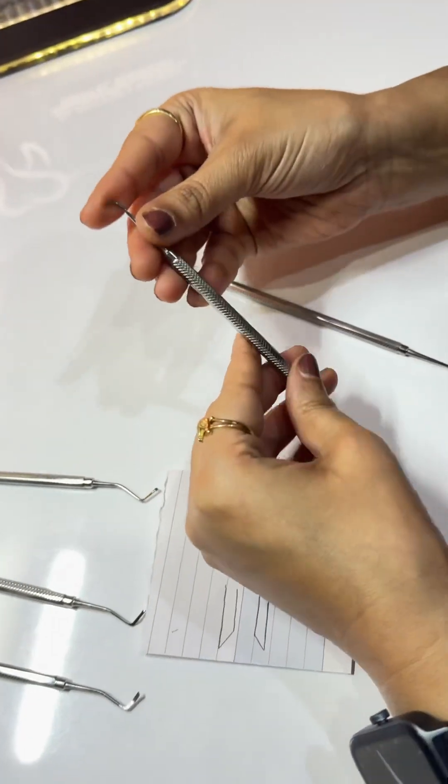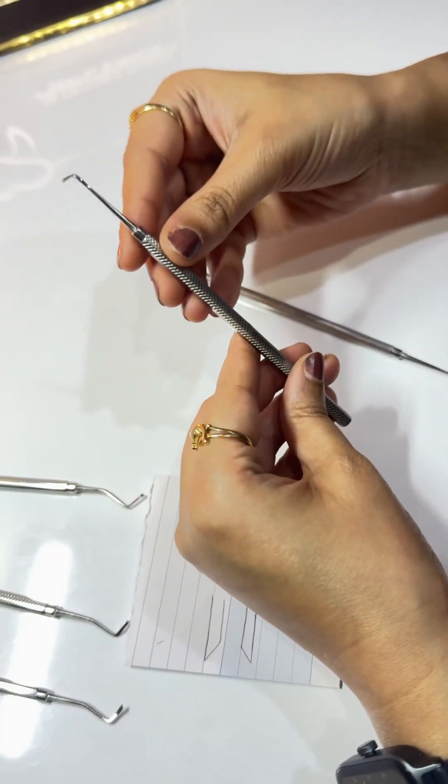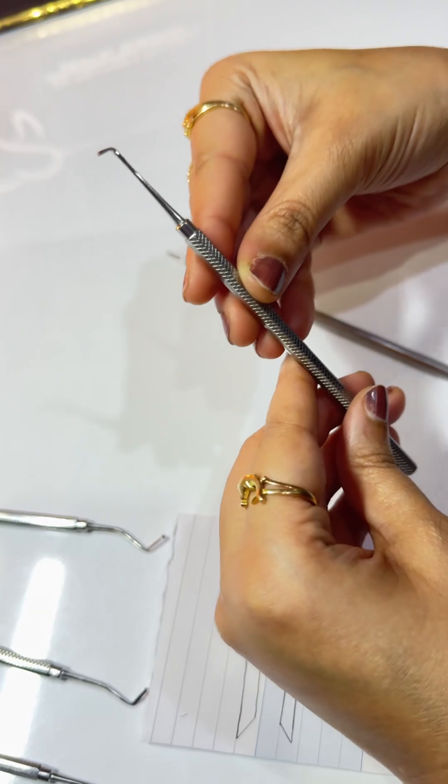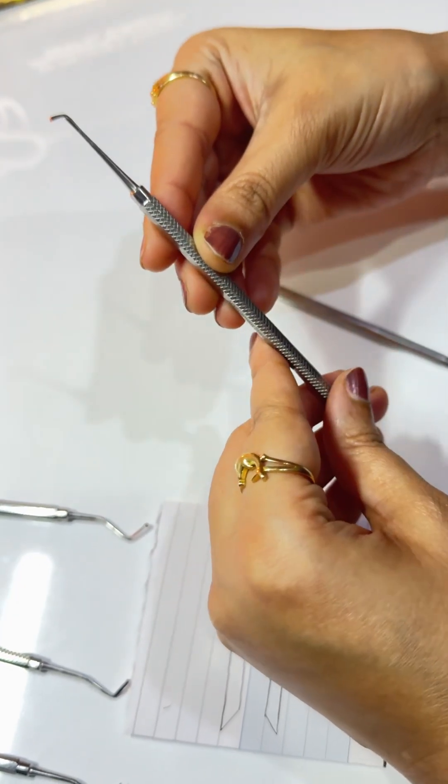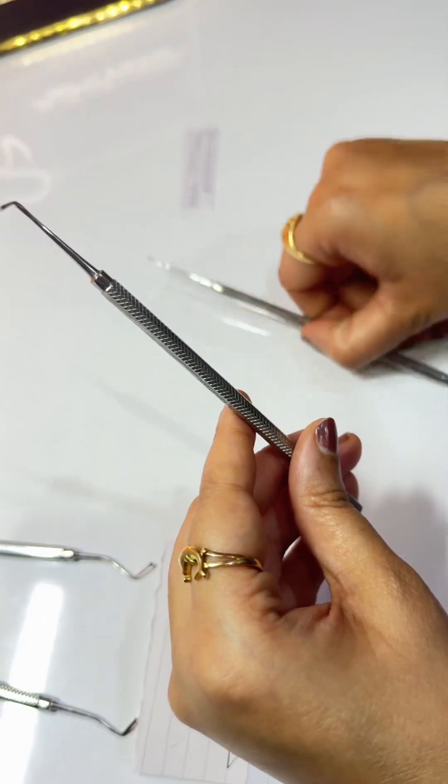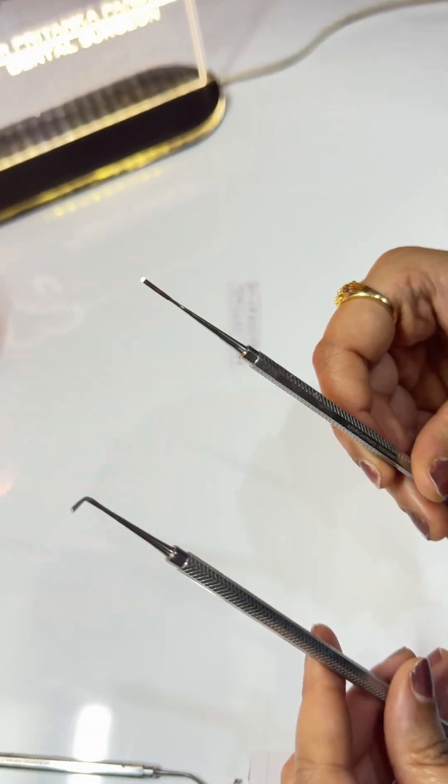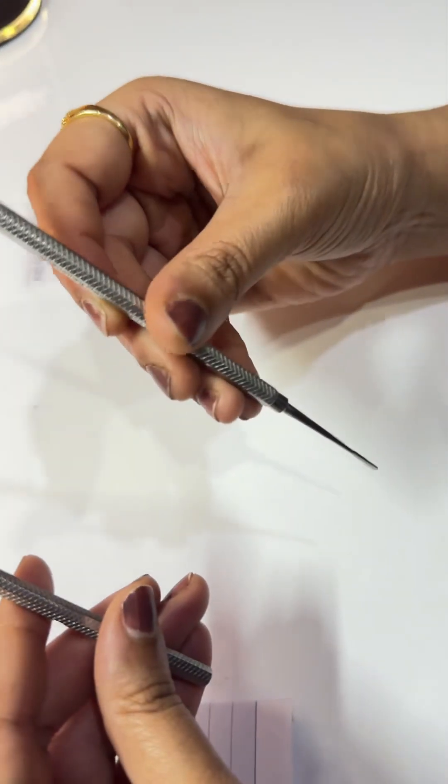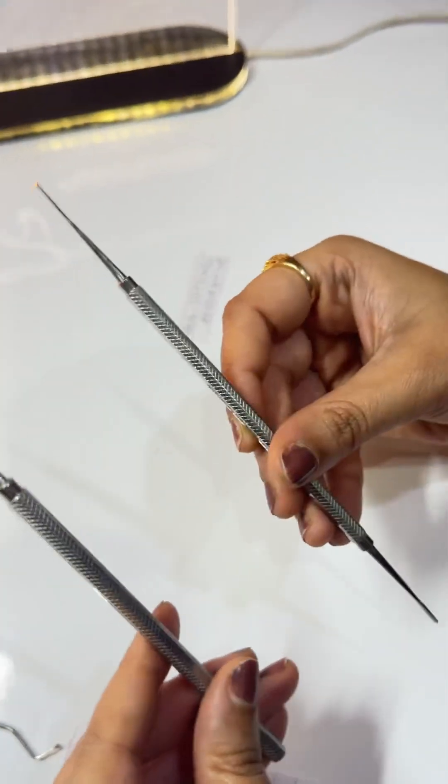The Ho is used in direct filling gold preparation and to define the line angles and point angles of class 3 and class 5 cavities. The chisel is used for cutting enamel and has a push stroke with lateral scraping action.